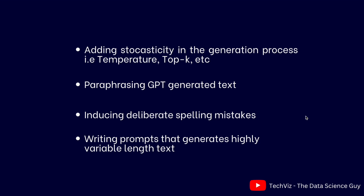The second method is paraphrasing — if you paraphrase the text generated by GPT-3, will GPT-0 still work? I don't have a definitive answer but I highly doubt it. Third is inducing deliberate spelling mistakes or playing around with punctuation, so the text looks a little unorganized and more likely to appear human-written. And the last one is writing prompts that generate highly variable length text. It would be really interesting to see how GPT-0 behaves when played around with any of these parameters.